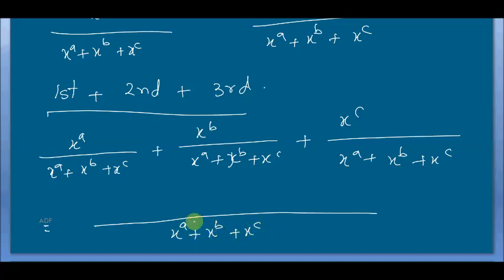You will get x^a, x^b, and x^c in the denominator, and here x^a plus x^b plus x^c in the numerator. You simply cut out this one and it becomes 1.